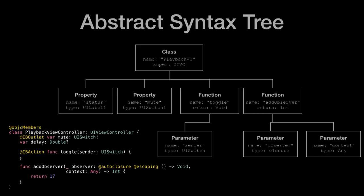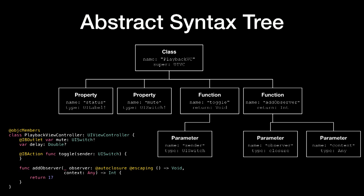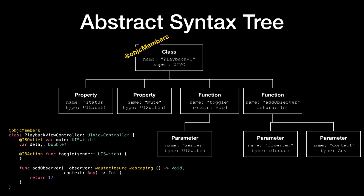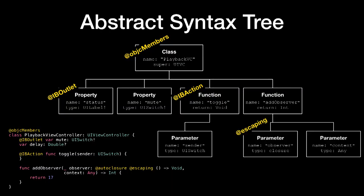A kind of abstract syntax tree for that code would look like this: class at the top — it's a directed acyclic graph. You've got your class, there are two properties, one for the outlet and one for the other property, and you've got the two functions — one takes one parameter, another takes two parameters. What happens with attributes is essentially someone with a rubber stamp goes and says: kachunk, this class has been tagged with @objcMembers; kachunk, the IBOutlet has that. It's like adding little extra bits of information to the syntax tree. The IBAction has one, and then there are two attributes for the fancy closure.